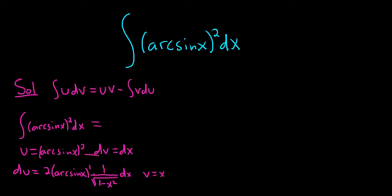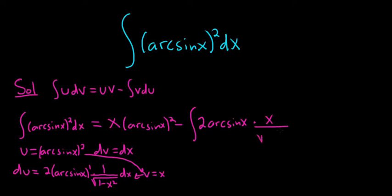Let's use parts. So we get uv, so x arcsine x quantity squared minus the integral of v du. So just multiplying these two, I'll leave the two inside. So 2 arcsine x and then times x over the square root stuff here, dx.